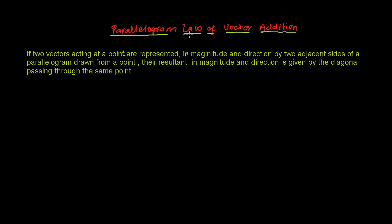Let's discuss the parallelogram law of vector addition after learning the triangle law of vector addition. The statement of the parallelogram law speaks like this: if two vectors acting at a point are represented in magnitude and direction by the two adjacent sides of a parallelogram drawn from a point, their resultant in magnitude and direction is given by the diagonal passing through the same point.